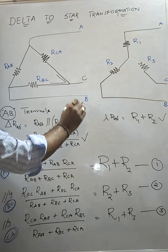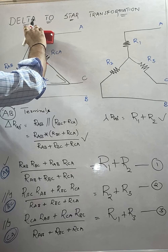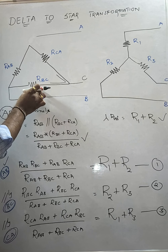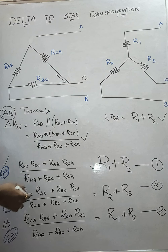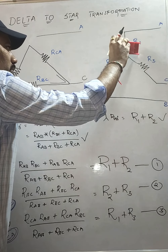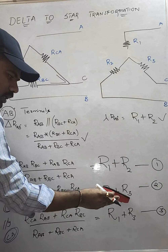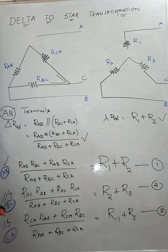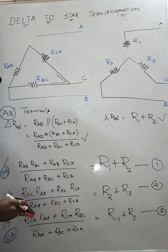In a similar fashion, move in sequence. For the second step, consider only B, C terminals. R_BC is in parallel to R_AB plus R_CA. These two are connected in series, and in the star connection, removing the third wire gives R2 plus R3 in series. Equating star connection equivalent to the delta connected value across B, C terminals, we get: R_BC into (R_AB + R_CA) divided by (R_AB + R_BC + R_CA) equals R2 plus R3. This is the second equation.